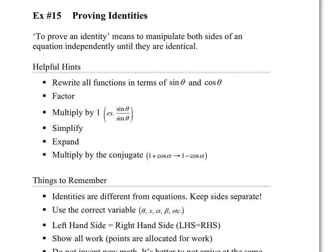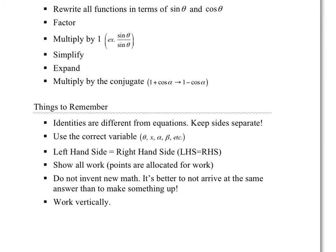If you multiply by sine over sine, you're changing the expression, but at the same time you're not changing the value because you're multiplying by one. Simplifying — that's tied in with factoring, canceling out common factors, things like that. Expanding means multiplying something so you can change the values that you have, and sometimes it asks you to multiply by the conjugate. I believe I have an example like that.